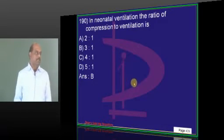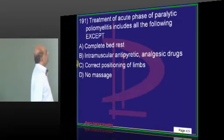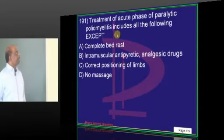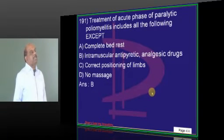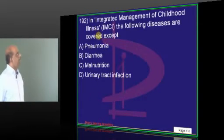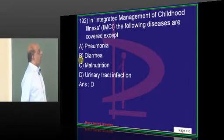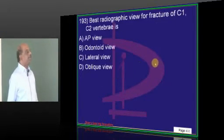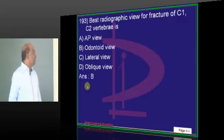One question on ALS is definitely common question in the exam. Intramuscular injections are contraindicated. We do not give the intramuscular injections because that can precipitate the poliomyelitic effect. Urinary tract infection. IMCI, what is not covered? Urinary tract infection. UTI is not there. Pneumonia, diarrhea, malnutrition, they are all included. C1, C2 vertebrae. Odontoid view.